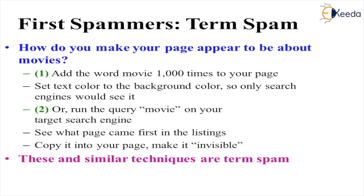Another technique was to run the query 'movie' on the target search engine, see which page comes first, copy the content of that page, and make that content invisible by setting the text color to the background color. These are similar techniques known as term spam, which were exploited in the first generation of spamming.